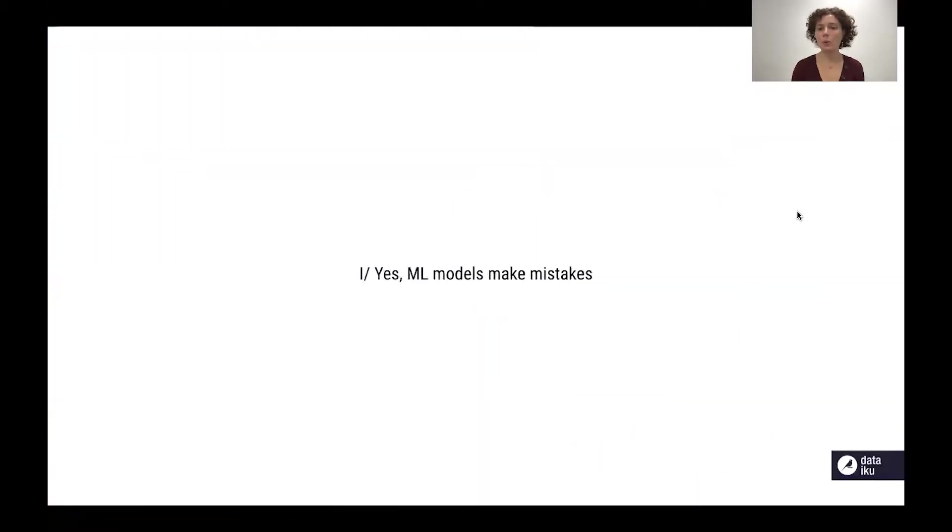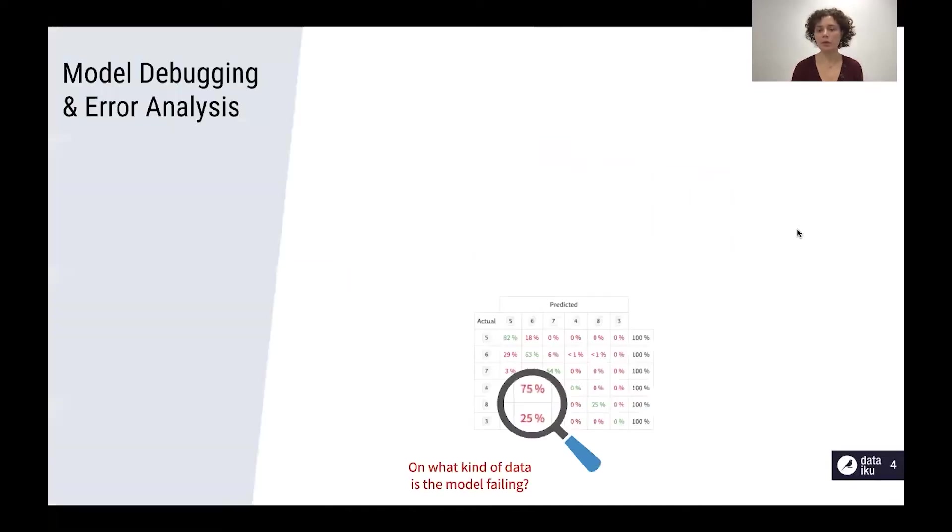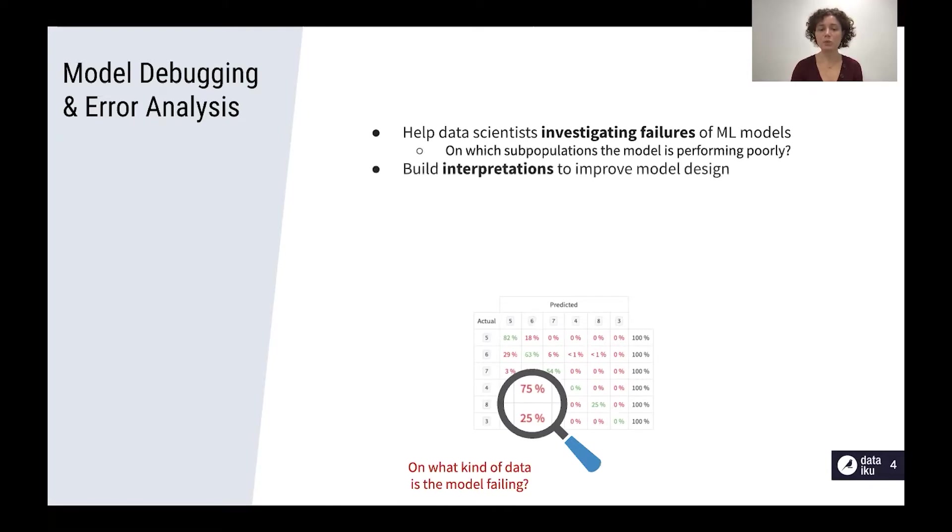Machine learning models make mistakes and model debugging and error analysis are necessary steps in the iterative process of model design. Any data scientist after training a machine learning model needs to investigate its failures to understand which sub-population the model is performing poorly, to build intuition about what are the problematic features correlated with the error and what are the feature values typical of failures.